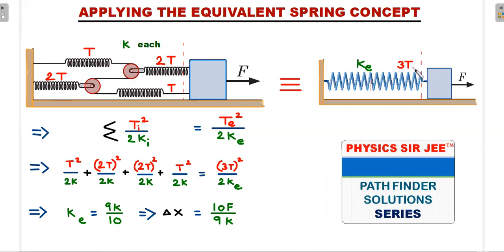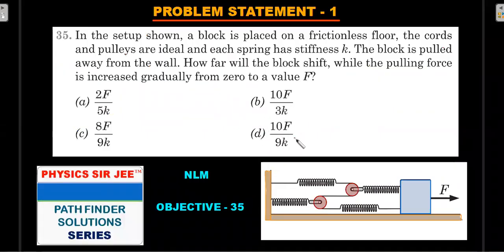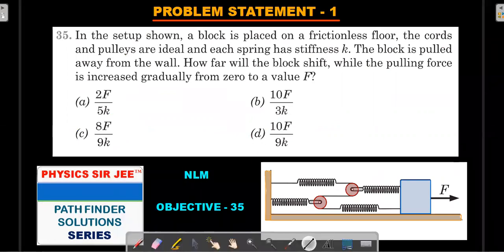The tension felt by the block is 3T, so I write it as 3T at the effective spring. The energy stored in the equivalent problem — (3T)²/(2k_eff) — must equal the sum of the four T²/2k terms from the actual problem. Substituting all four terms and solving gives k_eff = 9k/10. Converting to the equilibrium condition: force F equals k_eff times the displacement of the block, so the displacement equals F/k_eff = 10F/9k. That is the correct answer: 10F/9k.